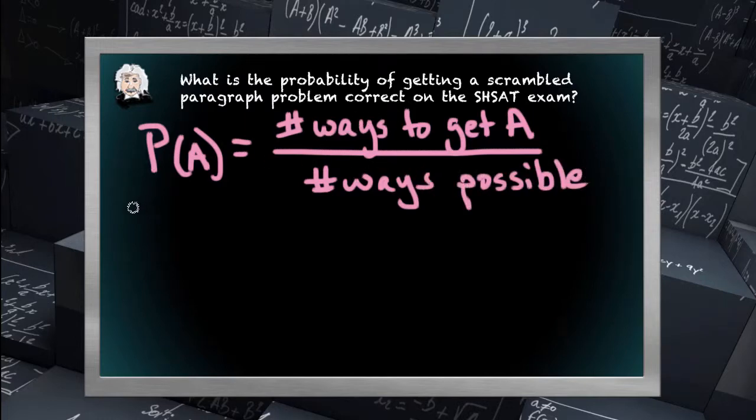Looking back, again, there's still only one unique answer. So the numerator is still going to be one. There's only one correct answer to a scrambled paragraph problem and you have to get them all in order.